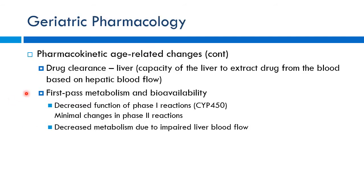For hepatic drug clearance, it's typically lower in elderly patients, mostly due to decreased blood flow to the liver rather than intrinsic enzyme changes. There may be some decreased phase one metabolism, but reduced blood flow is the main driver. More often, you'll run into drug-drug interactions because polypharmacy increases the chance of encountering CYP inducers or inhibitors. A CYP inducer decreases levels of affected drugs; a CYP inhibitor increases them.